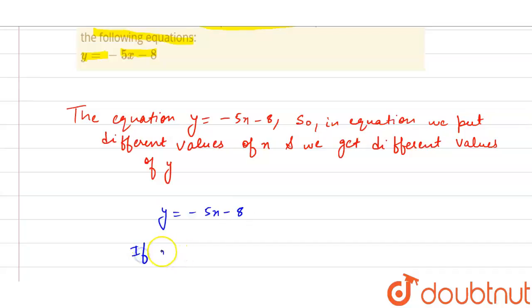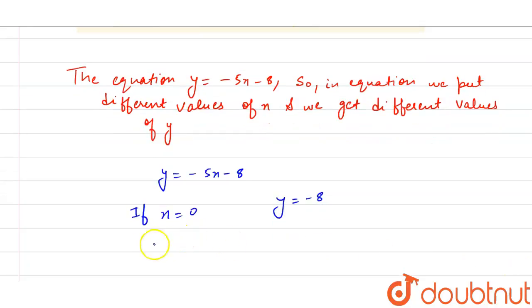If we put x = 0, we get the value -8. If we put x = 1, we get the value of y as -13.